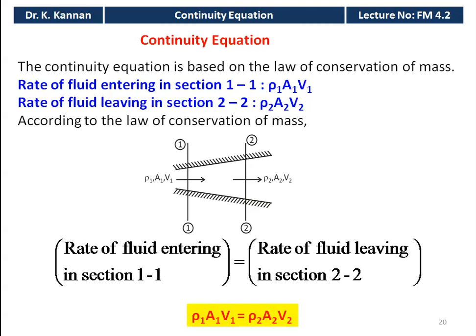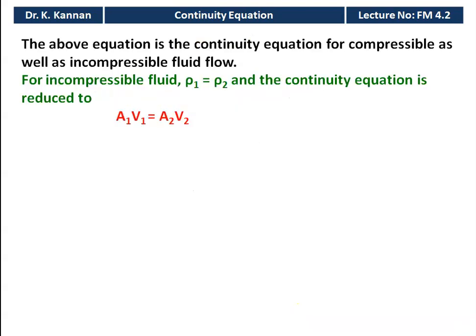According to the law of conservation of mass, mass inlet equals mass leaving: rho 1 A1 V1 = rho 2 A2 V2. This is the continuity equation for compressible as well as incompressible fluid flow. For incompressible fluid flow, rho 1 equals rho 2, so the equation simplifies to A1 V1 = A2 V2. This is a very important result to remember for solving problems in fluid mechanics.